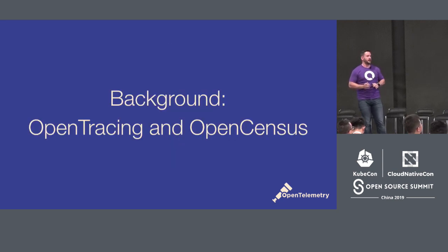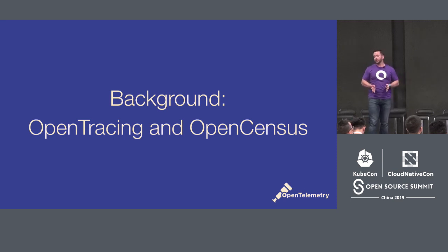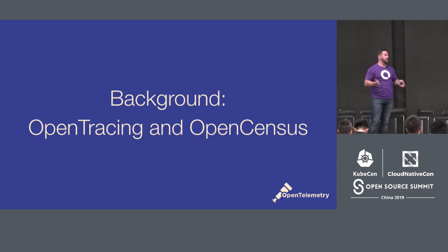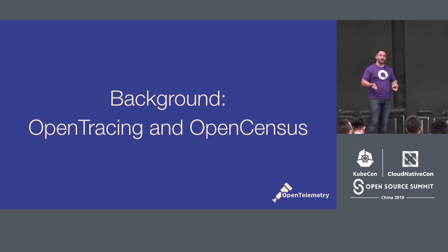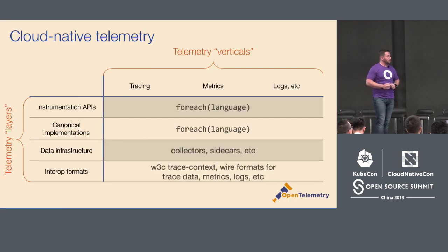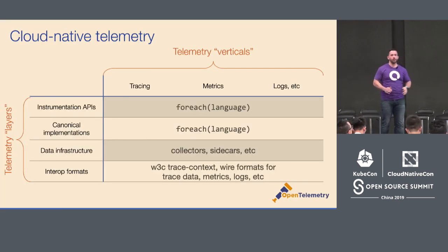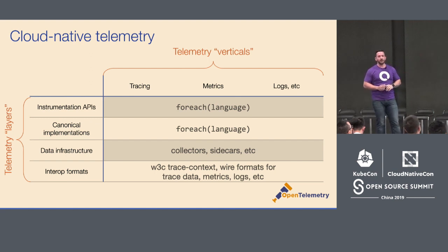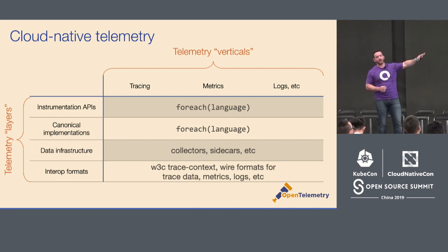So some background. I'm going to start by talking about OpenTracing and OpenCensus. You may have heard of OpenTracing because it's a CNCF project. You may have heard of OpenCensus because it's very popular in Google Cloud Platform, GCP, or in Microsoft Azure — both of them use OpenCensus today. When we talk about observability, or telemetry, there are really three different verticals. You may have heard about the three pillars of observability: tracing, metrics, and logs.